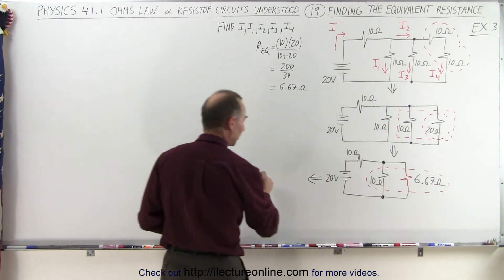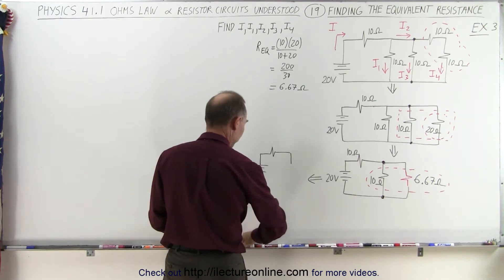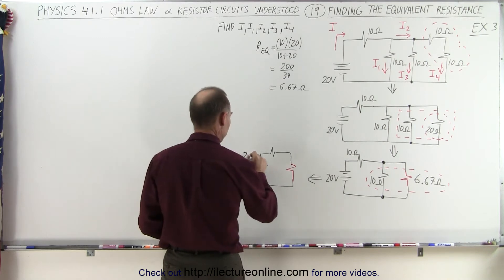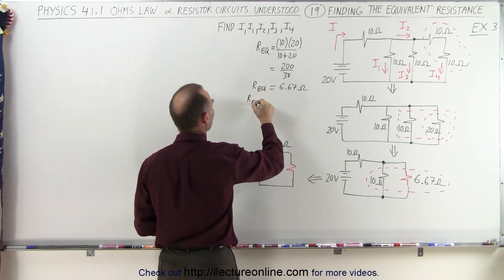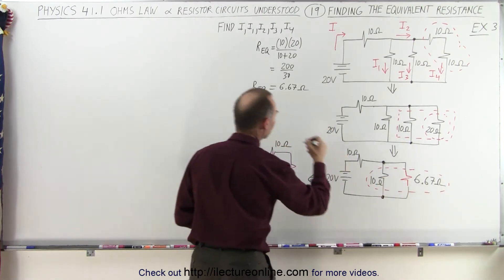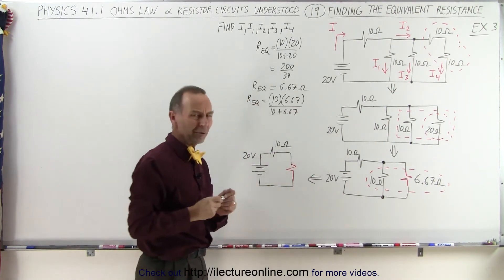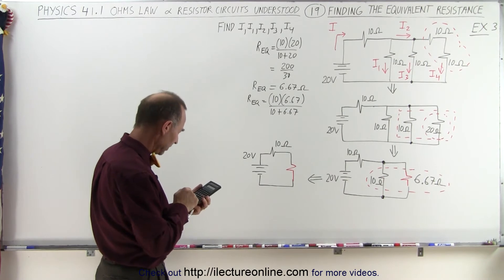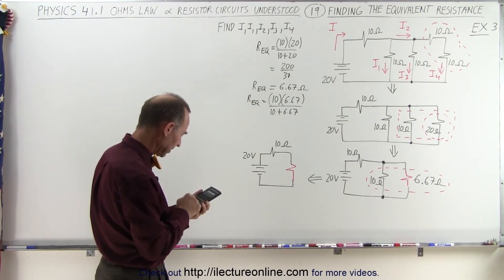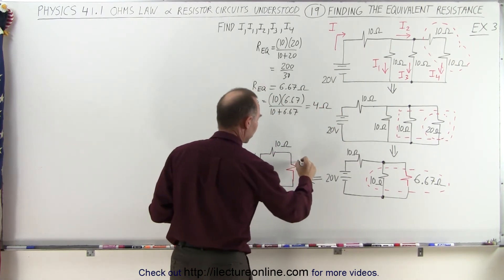Moving over, we have our 20 volt battery, a single 10 ohm resistor, and then those two will combine into a single equivalent resistor. Our equivalent is 10 times 6.67 divided by 10 plus 6.67. Using a calculator, that reduces to exactly a 4 ohm resistor.